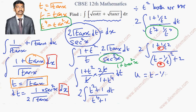The reason I purposely choose the opposite sign is: when I take the substitution u = t − 1/t from the denominator, then du = 1 + 1/t² dt. Since the numerator has exactly (1 + 1/t²), I can directly substitute u and du.